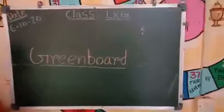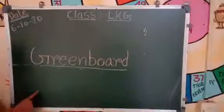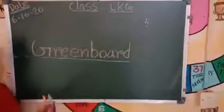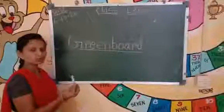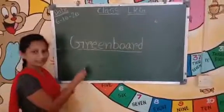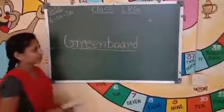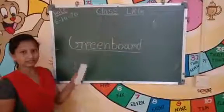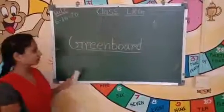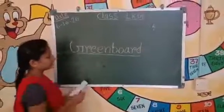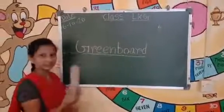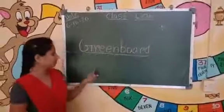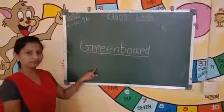This is a green board. What is this? This is a green board. I write on the green board with chalk. This is a chalk. A duster is used for erasing it. This is a duster, and this is chalk.